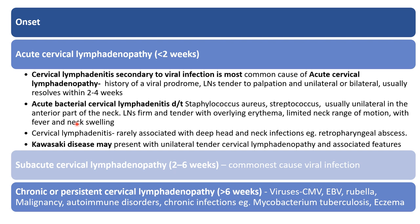Bacterial cervical lymphadenopathy is present in the anterior part of the neck. Lymph nodes are firm and tender. The patient will have overlying skin changes — erythema and warmth — as well as limited neck motion, fever, and swelling. Sometimes due to deep head and neck infection, for example a retropharyngeal abscess, the patient will have cervical lymphadenitis. Unilateral tender cervical lymphadenopathy is also present in Kawasaki disease.